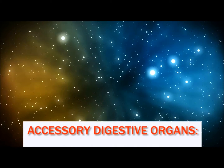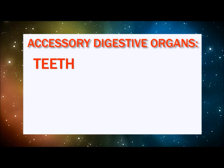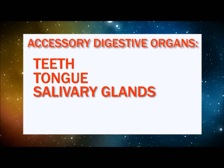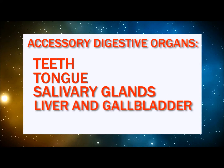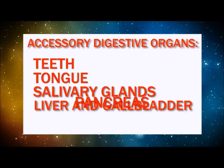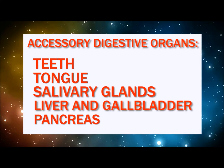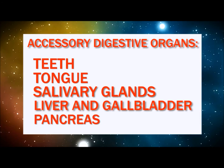The accessory digestive organs are the teeth, the tongue, the salivary glands, the liver and gallbladder, and the pancreas. In this first presentation, we're going to cover the mouth and all that's in it. You may want to pause this for a second and get a small mirror to have handy.